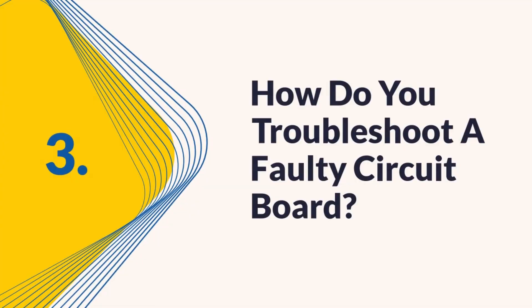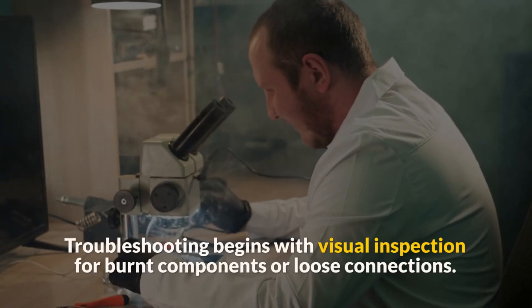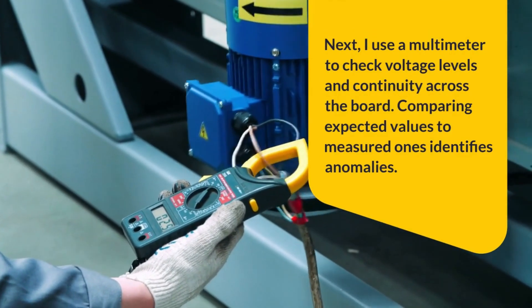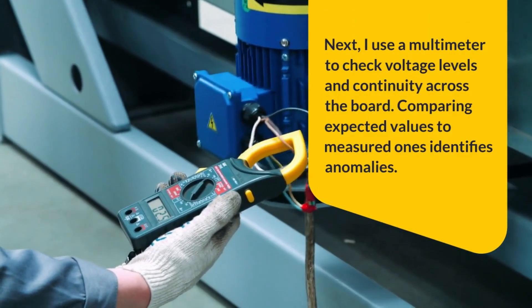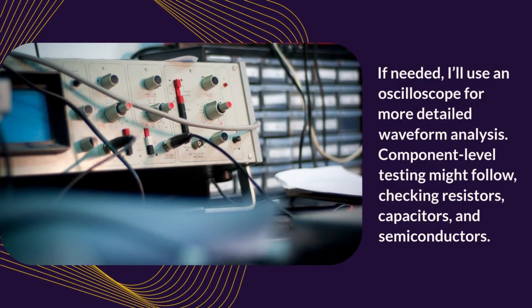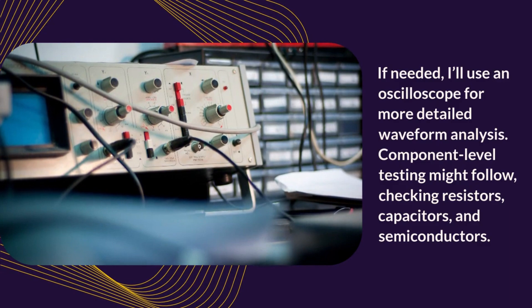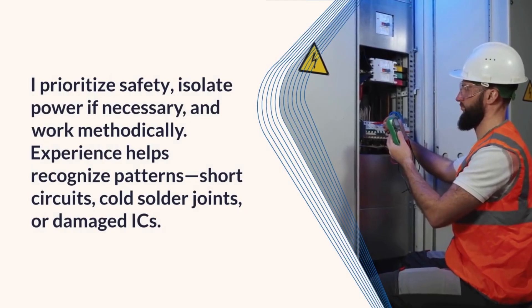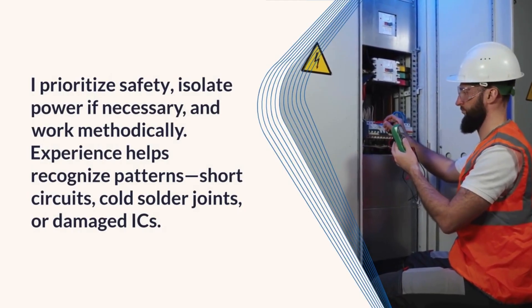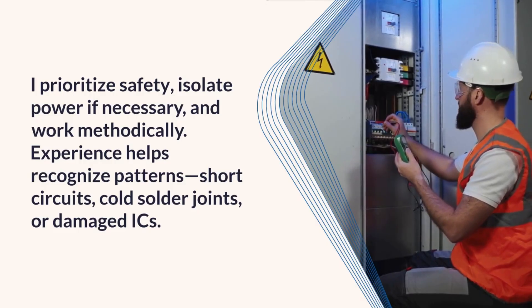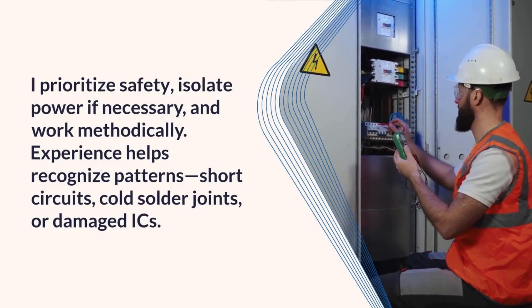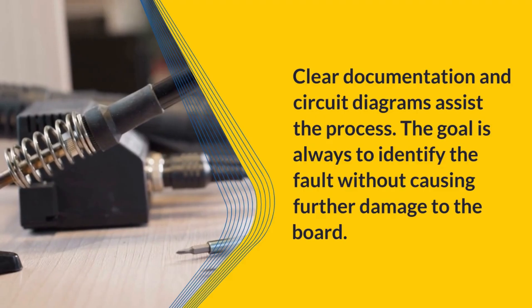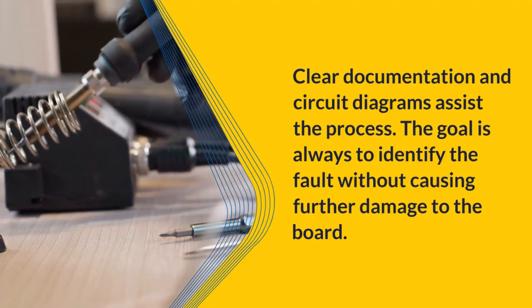Question 3: How do you troubleshoot a faulty circuit board? Troubleshooting begins with visual inspection for burnt components or loose connections. Next, I use a multimeter to check voltage levels and continuity across the board; comparing expected values to measured ones identifies anomalies. If needed, I'll use an oscilloscope for more detailed waveform analysis. Component-level testing might follow, checking resistors, capacitors, and semiconductors. I prioritize safety, isolate power if necessary, and work methodically. Experience helps recognize patterns — short circuits, cold solder joints, or damaged ICs. Clear documentation and circuit diagrams assist the process. The goal is always to identify the fault without causing further damage to the board.